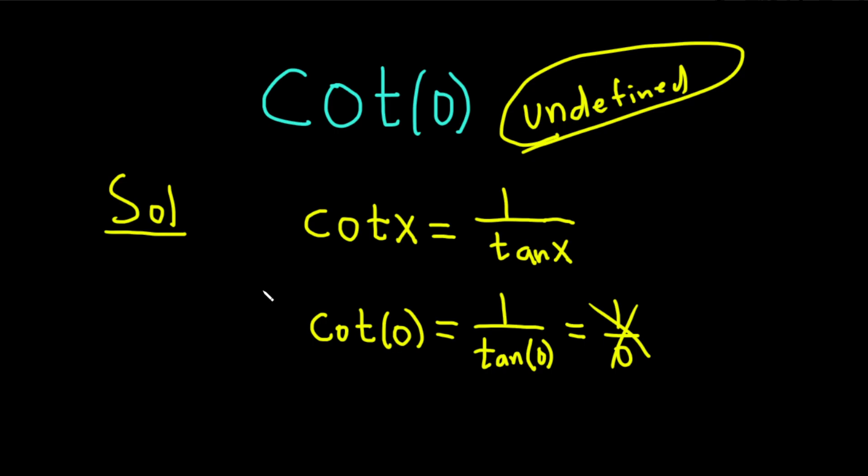Another way to do it is to think about it as cosine over sine. Recall that the cotangent of x is equal to the cosine of x over the sine of x. So if you try it this way, you get cotangent of 0, and that's equal to the cosine of 0 over the sine of 0.